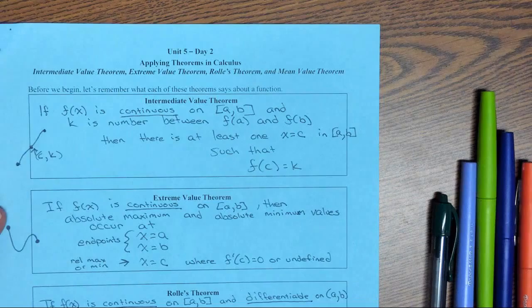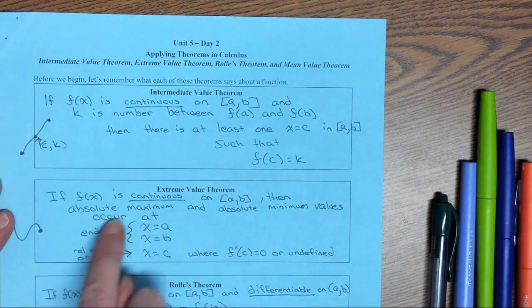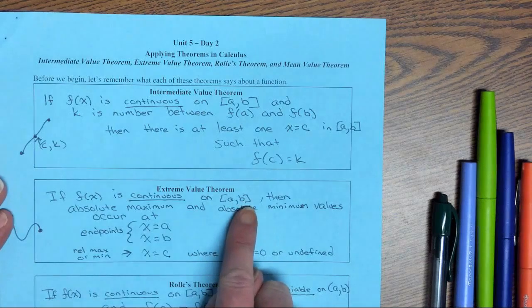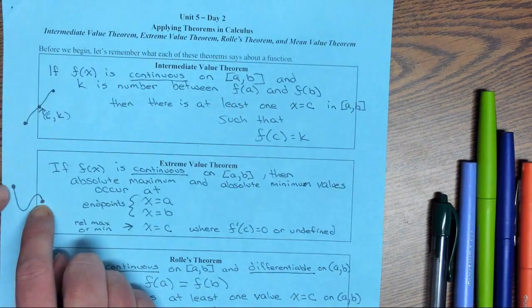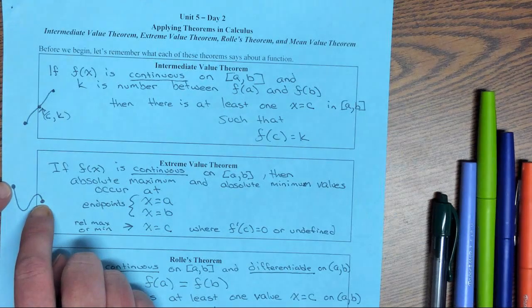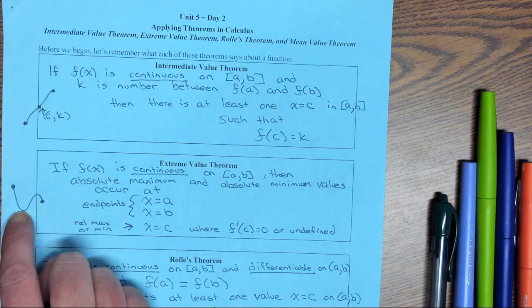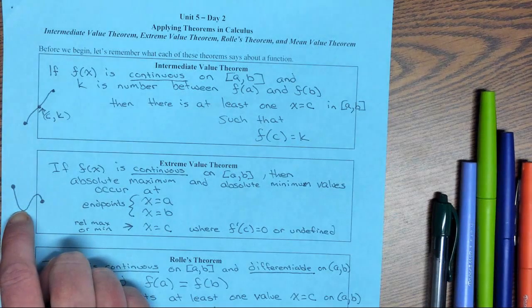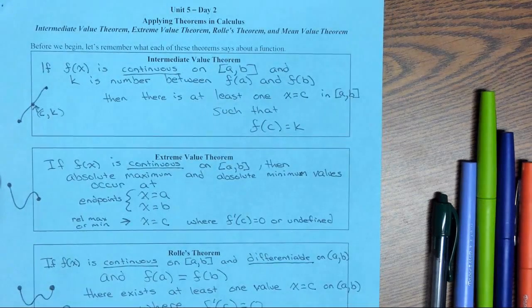Extreme Value Theorem says if we have a continuous function, then our absolute maximums and absolute minimums occur either at one of the endpoints, like that's the maximum, or it can occur at a relative max or min. This minimum, relative minimum, actually is the absolute minimum because nothing else is lower.